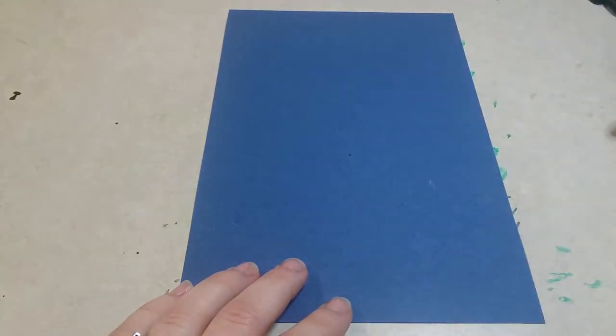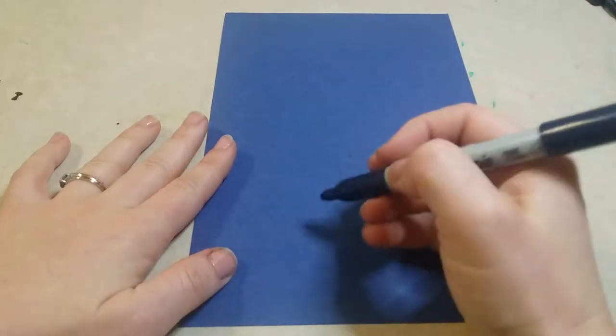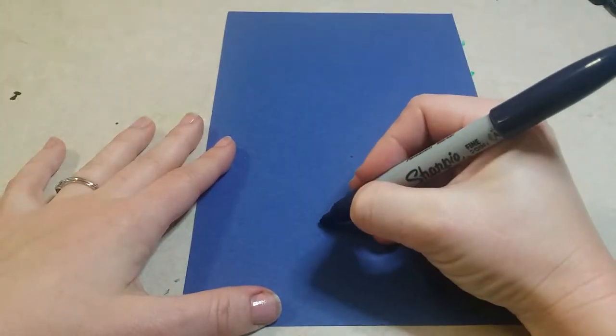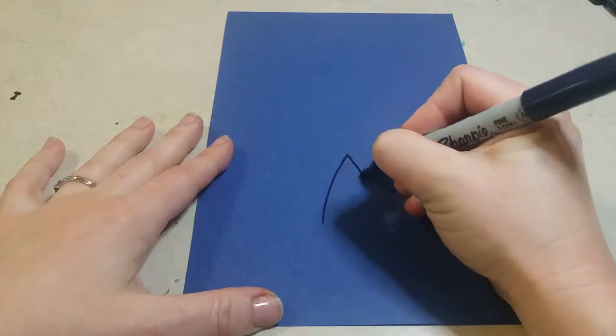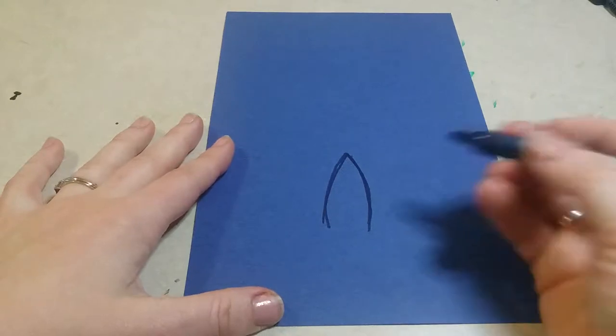You don't need to do this in sharpie. It's just if I use my pencil you won't be able to see it, so I'm just going to use a sharpie but you guys go ahead and start with a pencil. You are going to start by drawing kind of like a leaf shape towards the bottom of your paper here.